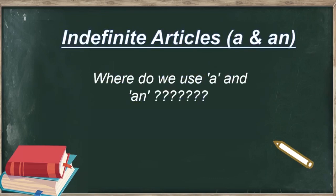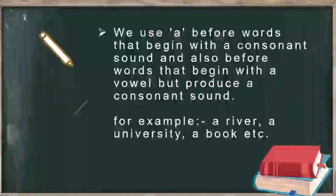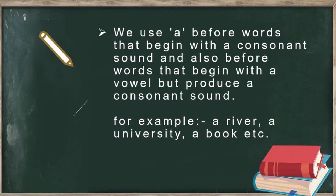Indefinite article — that is, a and an. Where do we use a and an? We use 'a' before words that begin with a consonant sound, and also before words that begin with a vowel but produce a consonant sound. The alphabets a, e, i, o, u are the vowels, and the rest of the alphabets are the consonants. So if the word begins with a consonant, we will use 'a'. But you also have to keep in mind that if the word starts with a vowel but has the sound of a consonant, then also we will use 'a'.